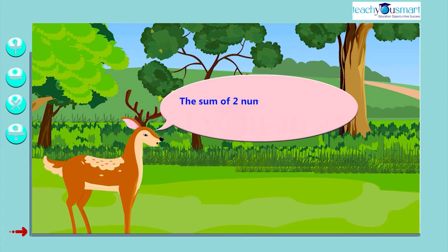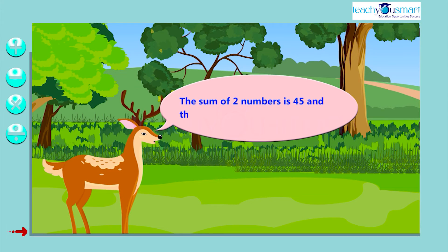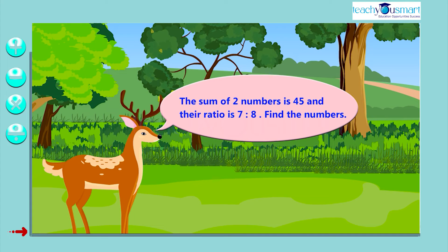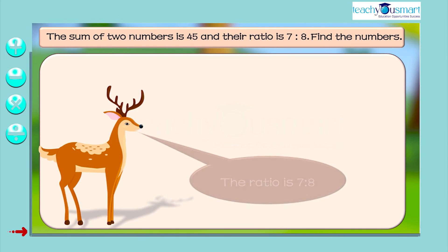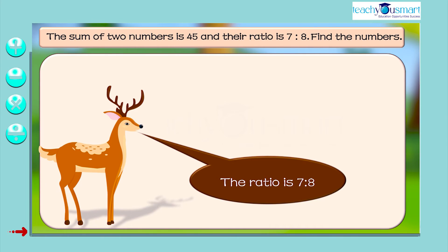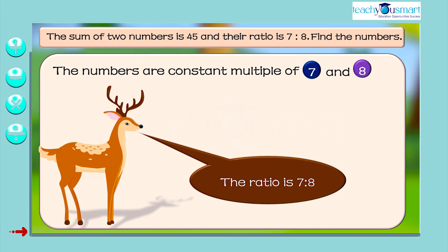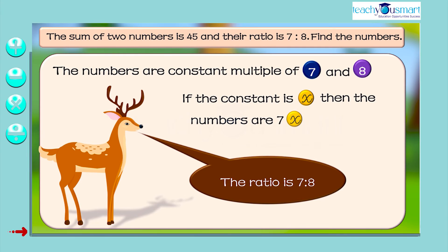The sum of two numbers is 45, and their ratio is 7 is to 8. Find the numbers. Since the ratio is 7 is to 8, the numbers are constant multiples of 7 and 8. If the constant is x, then the numbers are 7x and 8x respectively.